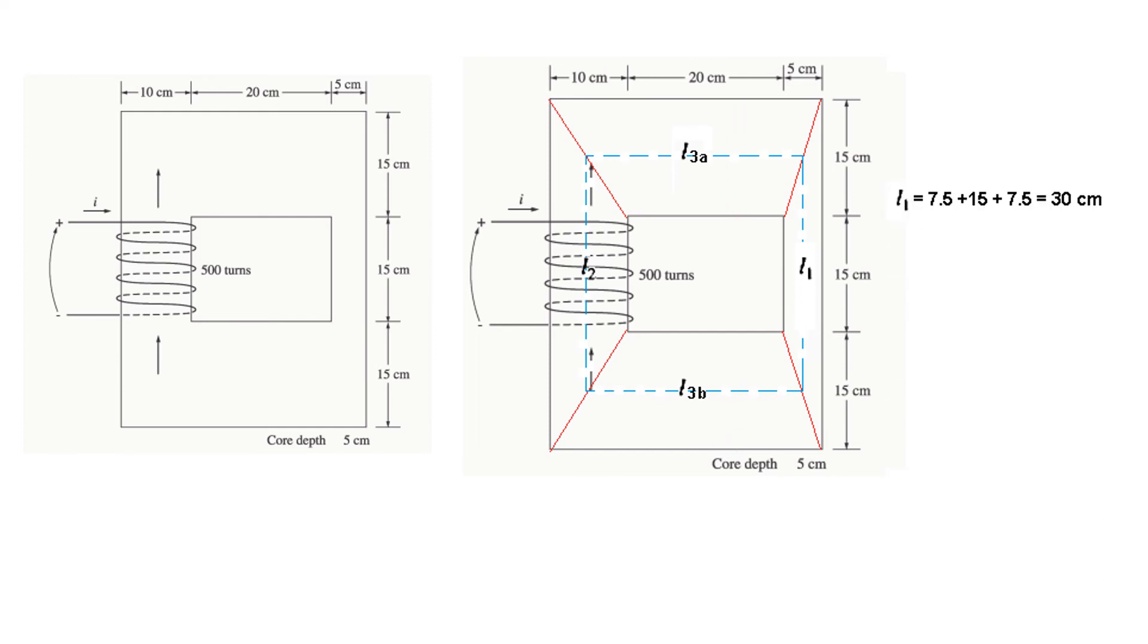And so, now we can calculate L1 from here, half of 15, 7.5, 15, and again here, half of 15, 7.5, that is 30 centimeter. Similarly, L2 is also half of 15, 7.5, 15, and half of 15. So this is also 30 centimeter.